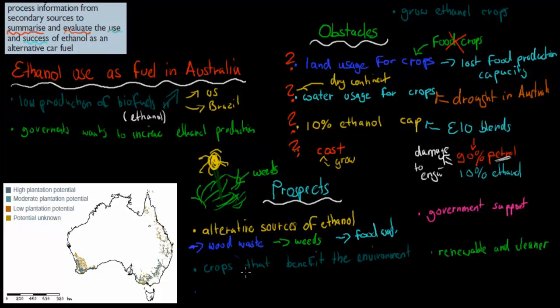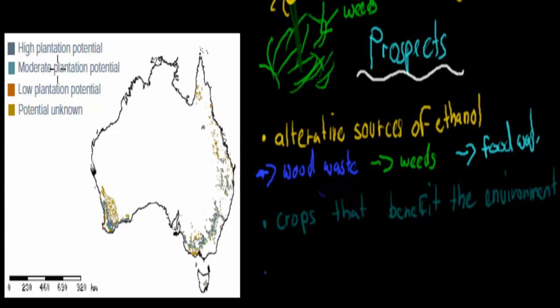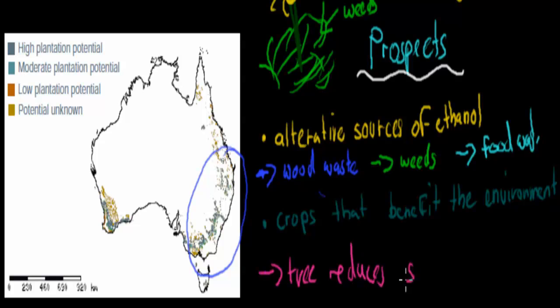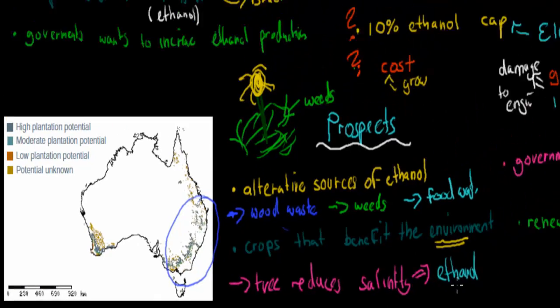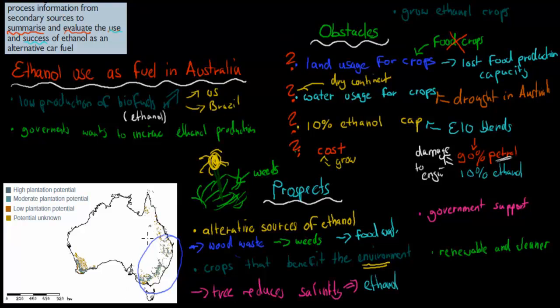Also, we want to have crops that benefit the environment, so this is actually a map of Australia. It says high plantation potential, moderate plantation potential and low plantation potential, and these are these dots here. You can see New South Wales and Queensland have quite a few of these dots, because that means they have high potential. This talks about a tree that reduces salinity. Salinity refers to high salt levels, so if it's high salinity, then there's high salt levels. And this tree, if you can plant that tree, it would actually improve the environment, it would make it better. There's a benefit to the environment. And we can then use that tree to make ethanol as well. So that kind of tree crop, if we plant that instead of planting corn, we could benefit the environment. It wouldn't take too much water. We could benefit the environment, and we could use that also to produce ethanol. That could be in the future as well. We don't have that at the moment, but we might make that more in the future.